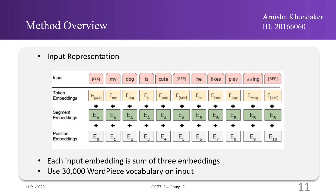The input representation in BERT is able to unambiguously represent both a single sentence and a pair of sentences in one token sequence, where a sentence can be an arbitrary span of contiguous text. The first token of every sequence is always the special classification token [CLS]. The final hidden state corresponding to this token is used as the aggregate sequence representation for classification tasks. Sentence pairs are packed together into a single sequence and differentiated in two ways: they are separated with a special [SEP] token, and a learned embedding indicating whether each token belongs to sentence A or sentence B is added. For a given token, its input representation is constructed by summing the corresponding token, segment, and position embeddings.